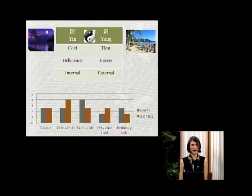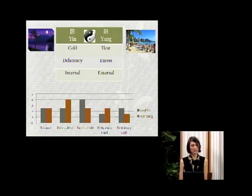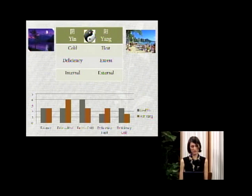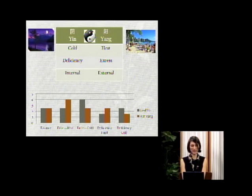In terms of the qualities of yin and yang, on the left is a night scene. The qualities of yin are: night, cold, calming, and nourishing — the quality of nourishing fluids. On the other side is a bright day at Waikiki. These have the qualities of daytime, heat, activity, and motion. These are the opposing qualities that we use to classify all disease in Chinese medicine.